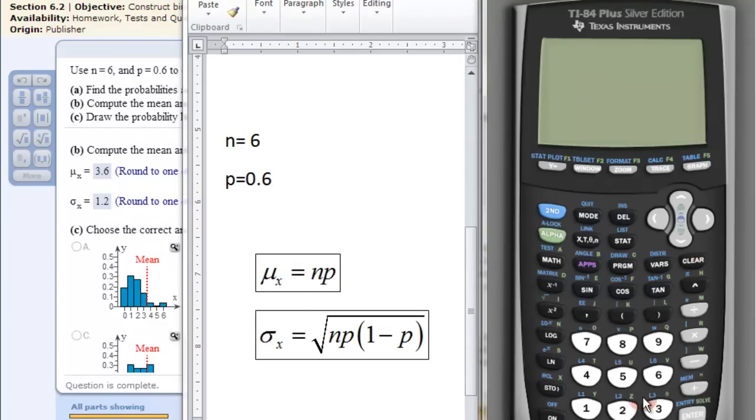So that's pretty quick. So 6 times 0.6. So 3.6. So that's the mean. So you have to do this every time for this.